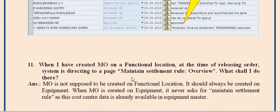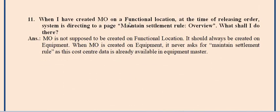When you create a maintenance order on a functional location and release the order, the system directs you to a page to maintain the settlement rule overview. An MO is not supposed to be created on a functional location — it should always be created on equipment. When a maintenance order is created on equipment, it never asks for a maintenance settlement rule because the cost center data is already available in the equipment master. Always create the maintenance order on equipment, since the maintenance activity was performed on the equipment itself.